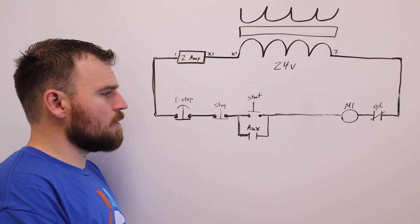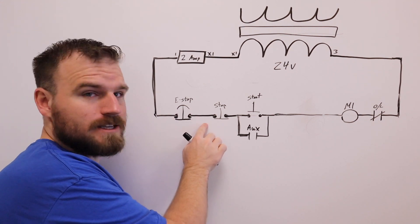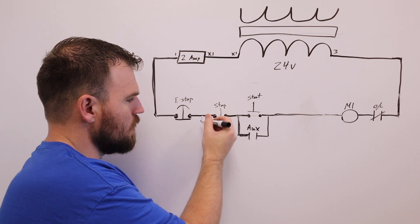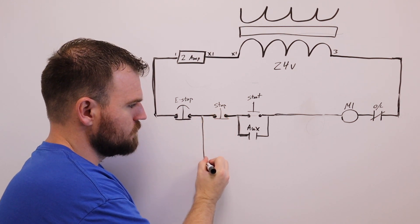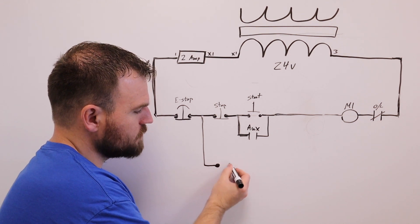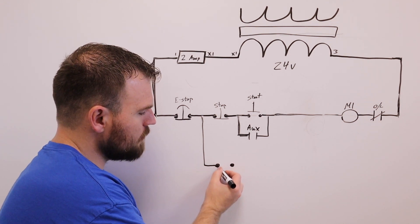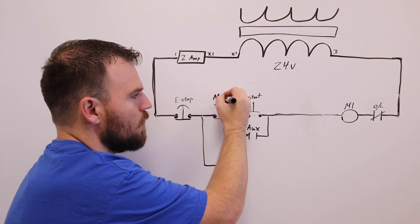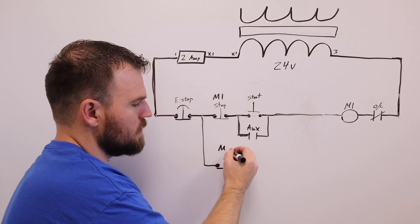Right here we have our e-stop. What we're going to do after the e-stop is start putting in another rung, another drop down to about right here. It's going to come over and go into another stop switch. So this stop switch will stop motor one - we'll do M1 stop, and this will be M2 stop.